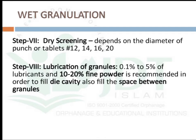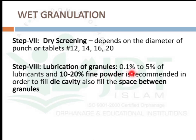After drying, the granules are screened again by dry screening using sieve sizes 12, 14, 16, or 20 to get smaller granules of uniform size. Then in the next step, the granules are lubricated: 10–20% of fine powders from the dry screening are added, along with lubricating agents such as 1–1.25% of magnesium stearate. The fine powder fills the die cavity and the spaces between granules. After lubrication, compression follows.